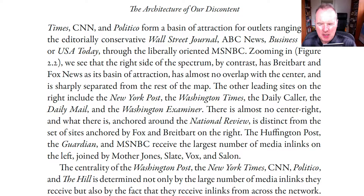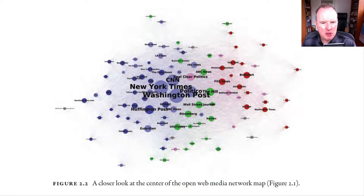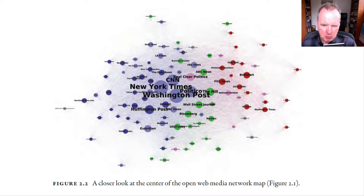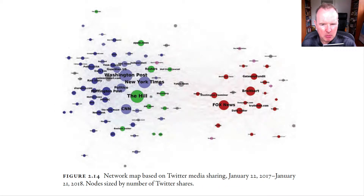That's the key point they want to make: we can see in the architecture, the particular structure of the public sphere and of information sharing in the United States, an asymmetrical structure. It's a condition where you have a right-wing media ecosystem which is separated from the rest, and also separated from the norms that govern the rest — those of professional journalism with its corrective functions, the reality corrective process. This is what they describe as an asymmetric media ecology, linked to an asymmetric political polarisation.